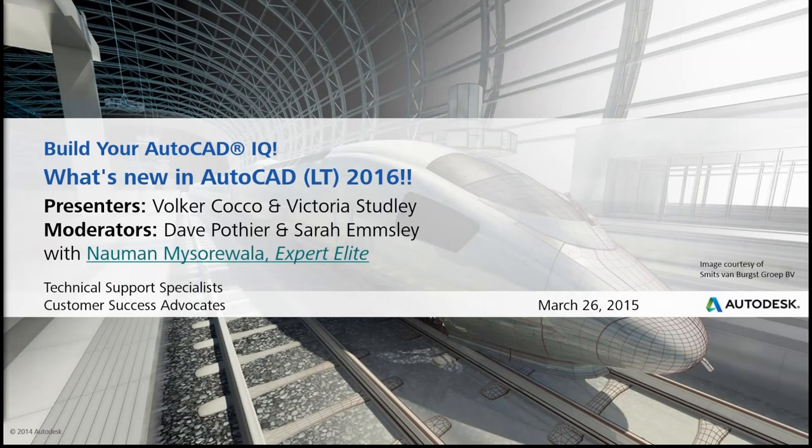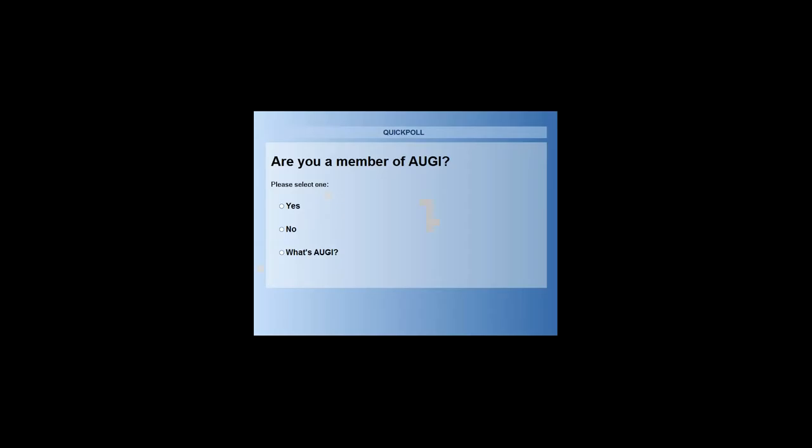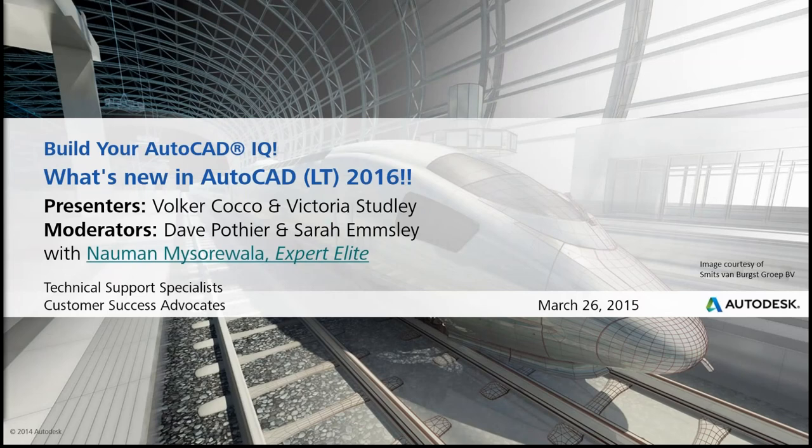One more quick question: we want to know if you're a member of AUGI, the AutoCAD User Group International. If you're not familiar with AUGI, we have a lot of input from AUGI on what goes into the product in each release. It looks like roughly 40% are members of AUGI, and 15% have never heard of AUGI before. If you're not familiar with AUGI, it's a good thing to check into — they often have meetings in different locations around the country. With that, we'll turn it back over to Volker to get the presentation started.